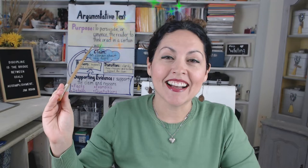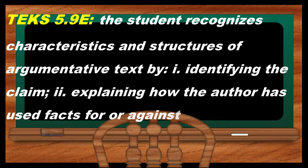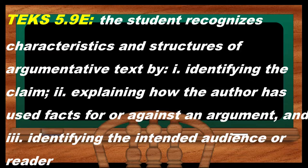I'm going to go ahead and start with the TEKS. Just as a reminder, we are focusing on 5.9E, which says: recognize characteristics and structures of argumentative text by — and there are three parts: (I) identifying the claim, (II) explaining how the author has used facts for or against an argument, and (III) identifying the intended audience or reader.